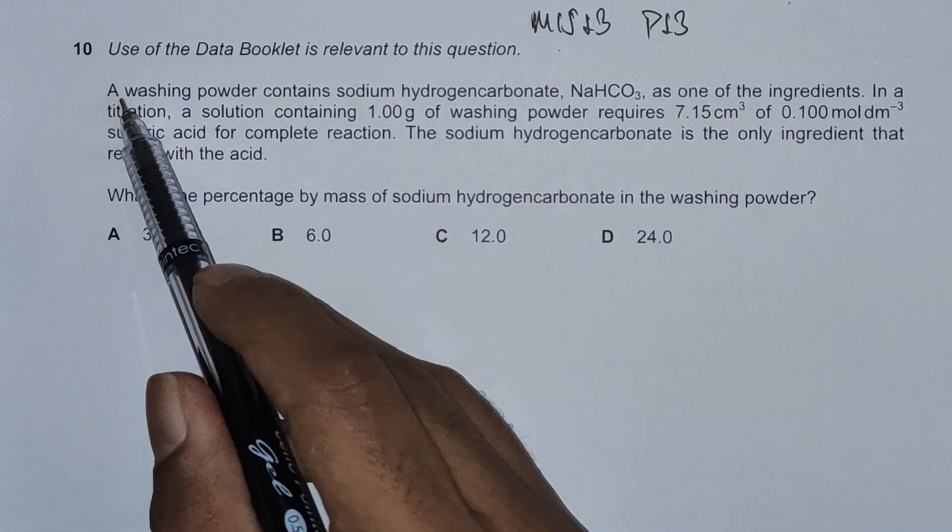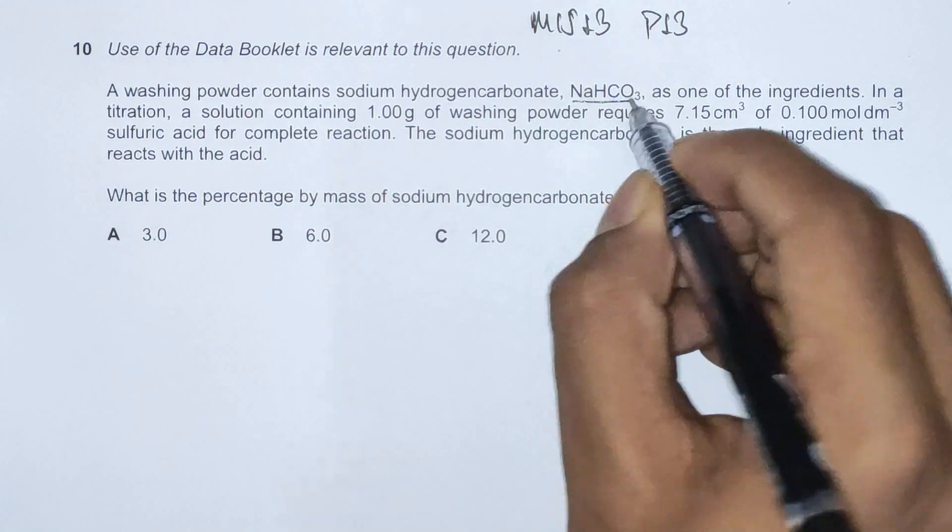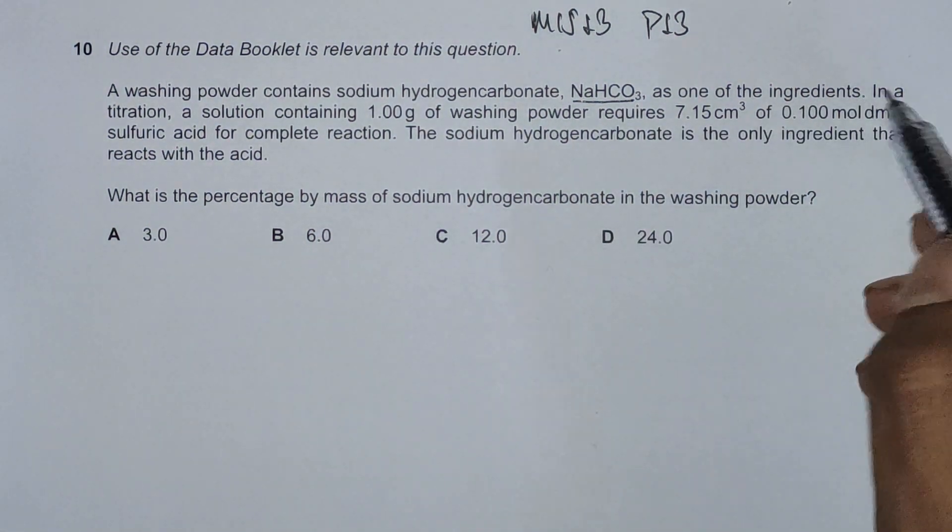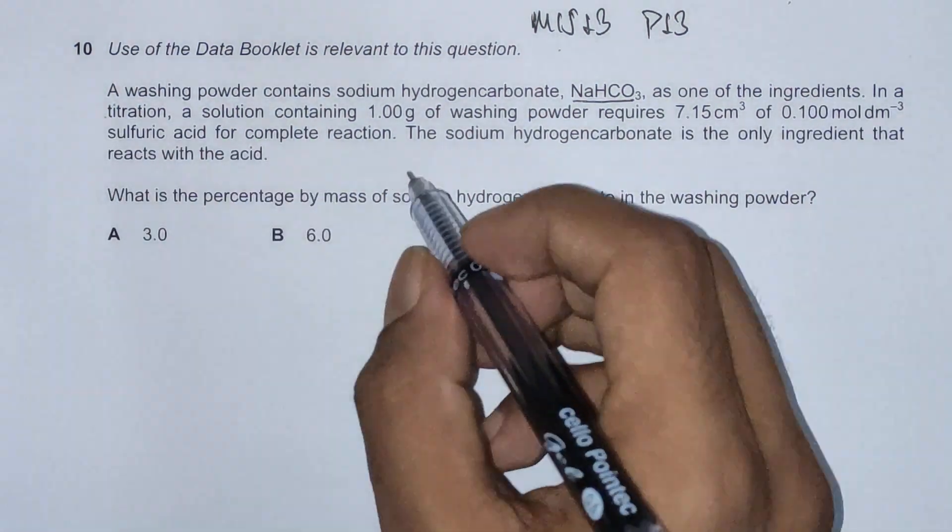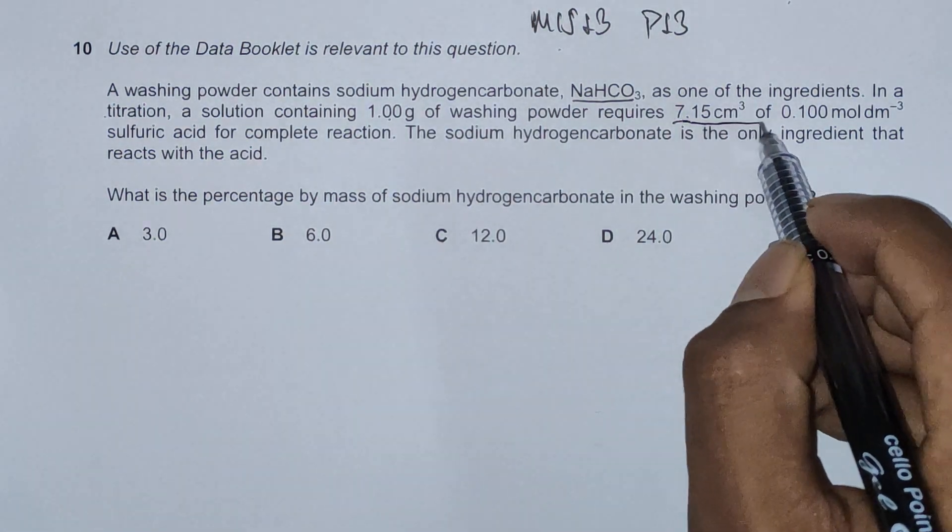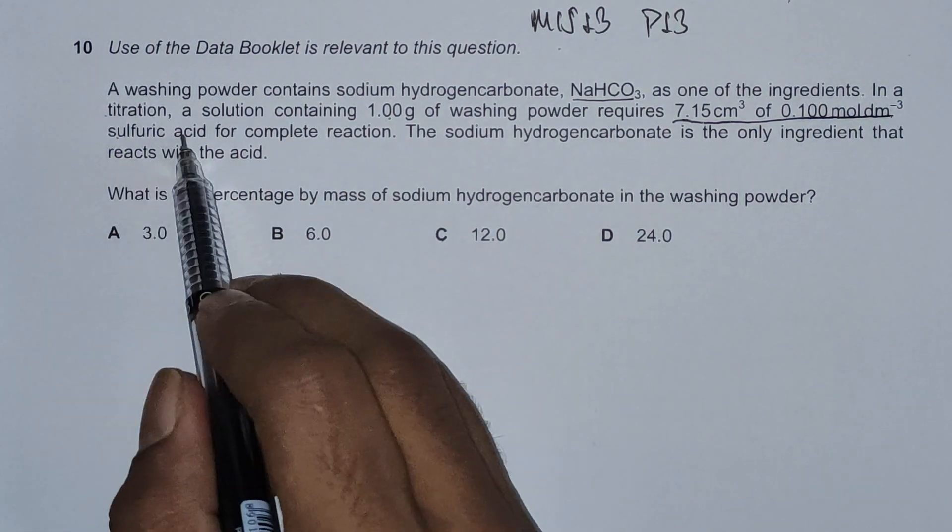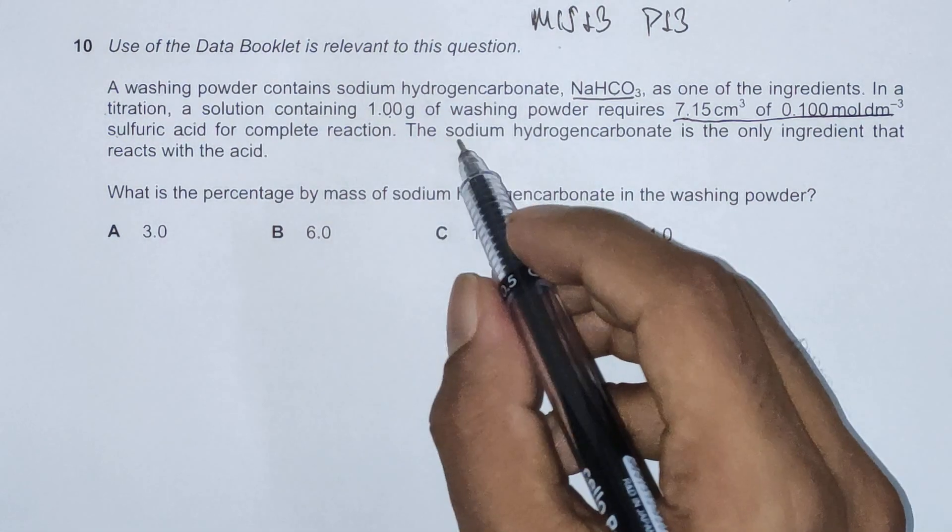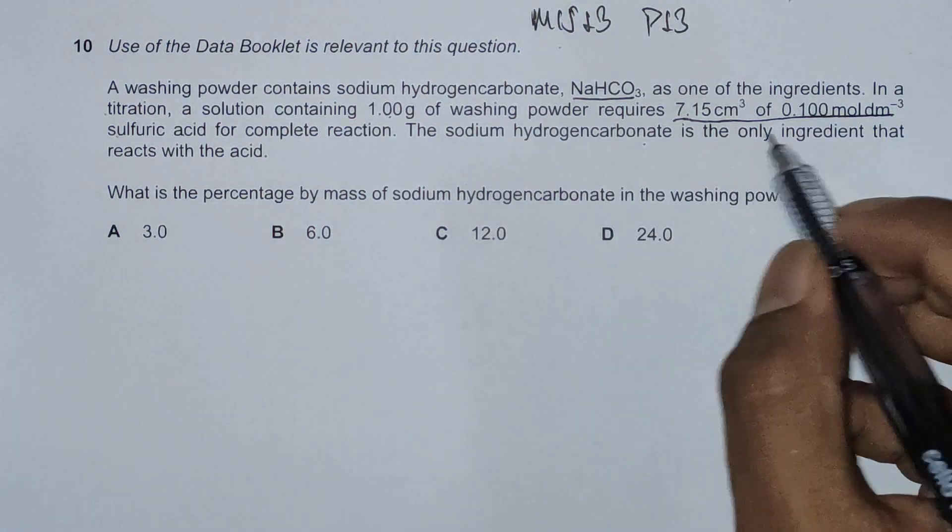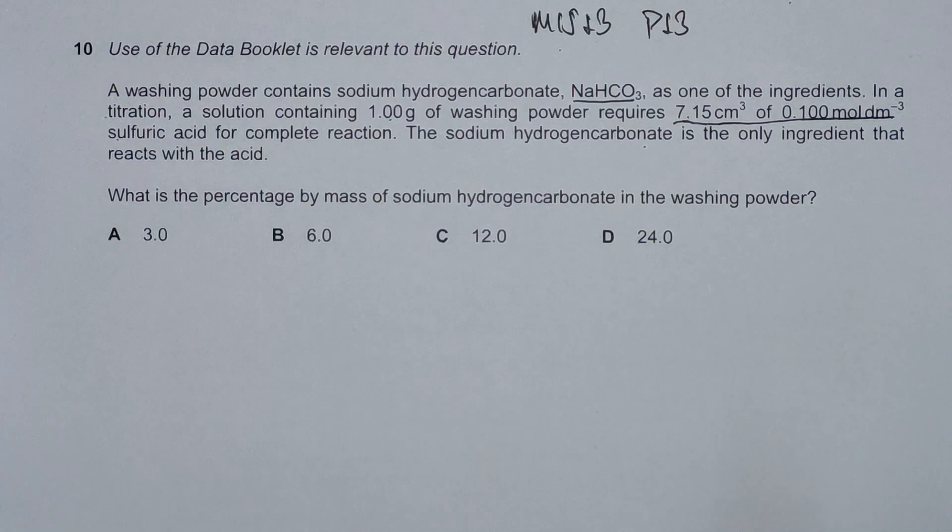The question reads: a washing powder contains sodium hydrogen carbonate, NaHCO3, as one of its ingredients. In a titration, a solution containing 1.00 g of the washing powder requires 7.15 cm³ of 0.100 mol/dm³ concentration sulfuric acid for complete reaction. The sodium hydrogen carbonate is the only ingredient that reacts with the acid.